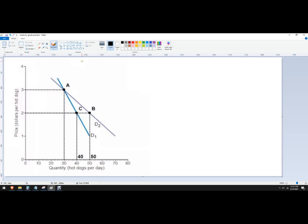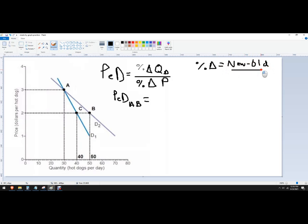So the formula for price elasticity of demand is the percent change in quantity demanded divided by percent change in price. So let's go A to B. The percent change formula, usually we're going to use what's called the midpoint method. So what that is, is it doesn't matter whether you're going from A to B.